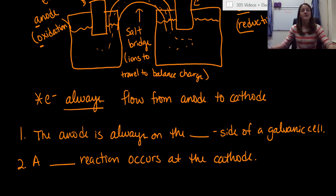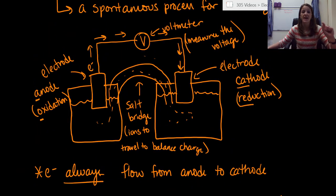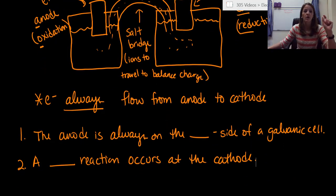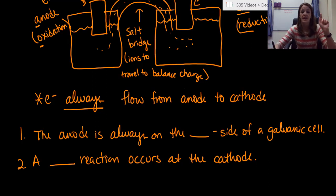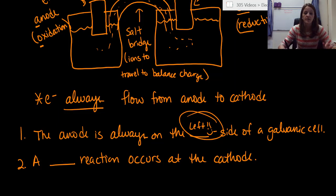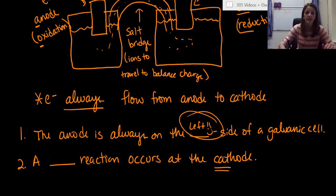The anode is always on the left side — always. It's never going to be on the right. And the reaction that occurs at the cathode — think red cat — is definitely going to be a reduction reaction. These are things that need to be innate; you should be able to pop them out really quickly.